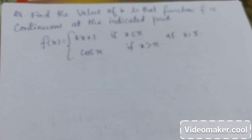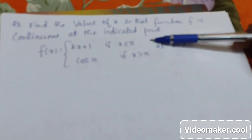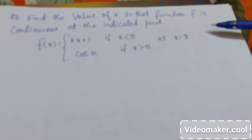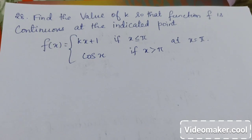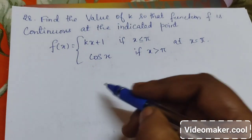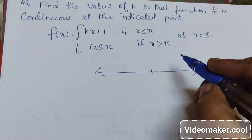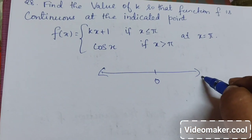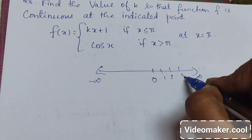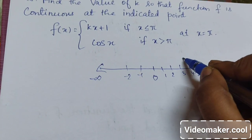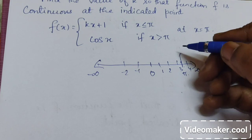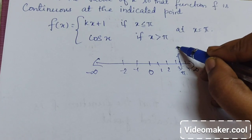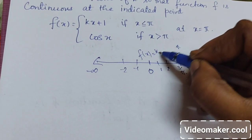Now we will discuss problem number 28. Here, find the value of k so that the function f is continuous at the indicated point — at pi. Whenever the values of x are less than or equal to pi, we have the function as kx plus 1. And when the values of x are greater than pi, we have the function as cos x.